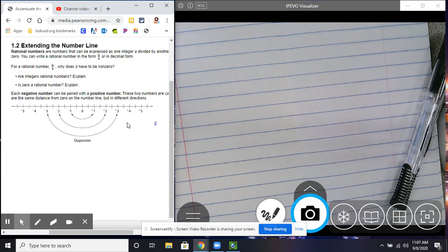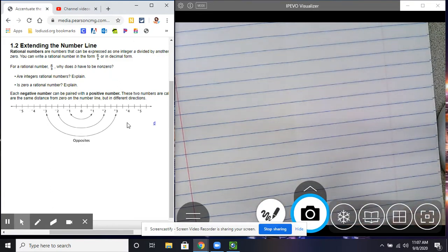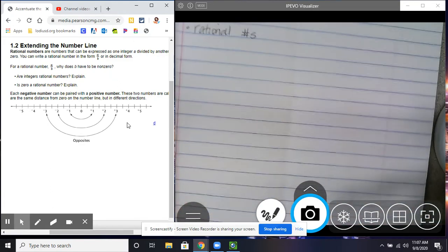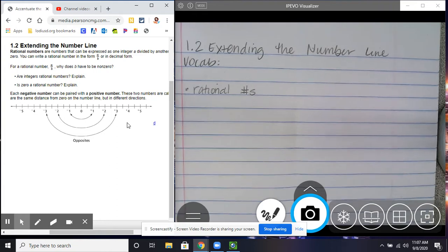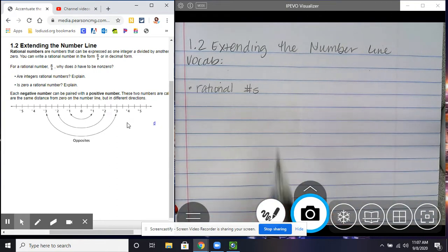All right, we are starting 1.2, which is called extending the number line. So first we're going to start with vocabulary. Go ahead and get all this written down.